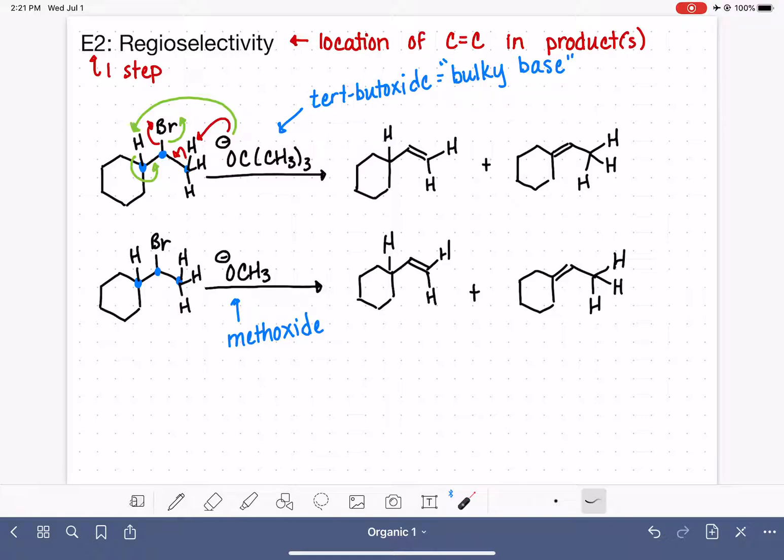Because it is easier for the bulky base to grab a hydrogen out here at the end of the carbon chain, this particular reaction, the product that is formed as a result of the bulky base going after one of these end hydrogens, is what we call our major product, the product that we make the most of. The other product is still formed, but it is formed in a lesser quantity. So we call that the minor product.